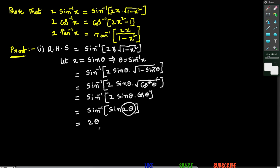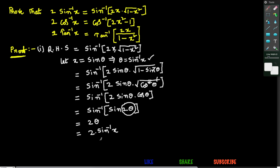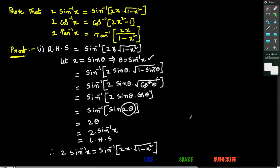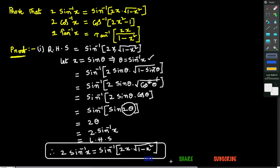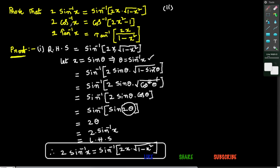That equals 2 × θ. We took x = sin θ, so θ = sin⁻¹x. In place of θ, we write sin⁻¹x, giving 2 sin⁻¹x. We started with RHS and obtained LHS. Therefore, we have proved that 2 sin⁻¹x = sin⁻¹(2x√(1−x²)).